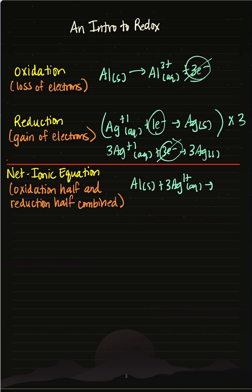Produces three Ag solid and aluminum ions. That's how my net ionic equation will look when I add up my two half reactions.